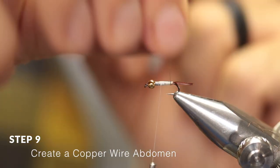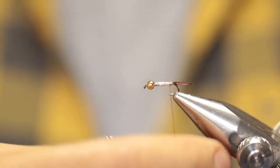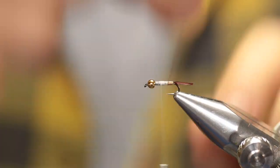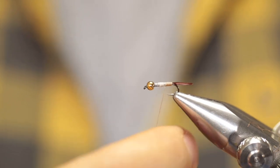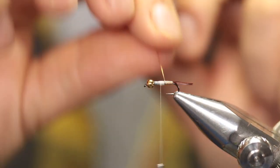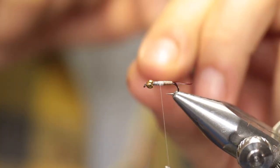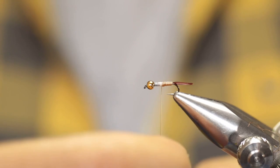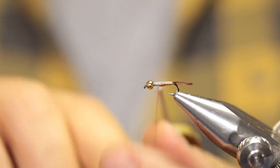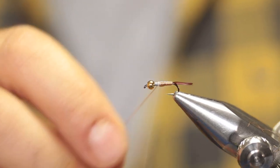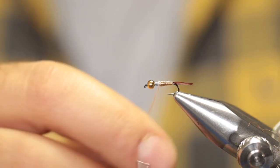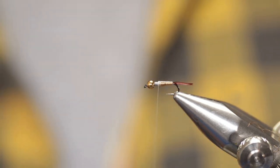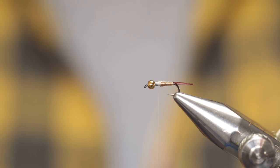Now with touching turns, wrap your copper wire forward neatly. Take your time doing it. It's fine if there's a little bit of thread exposed—I don't think the fish really care—but if you can, try and maintain control. You'll see that creates a much better looking body. Right when you reach the point where the thorax will start, tie it off and cut off the excess. That's your abdomen done.